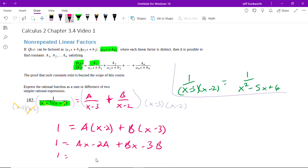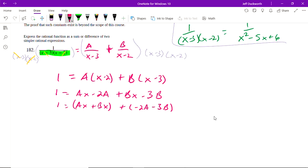So I have 1 equaling AX minus 2A plus BX minus 3B. And I can bring out the X. So I can write this as AX plus BX plus negative 2A minus 3B. Right? I can do that. I can just separate these without an issue. So what this means is, well, I can pull out an X for this first bit. And then I can leave this other alone.